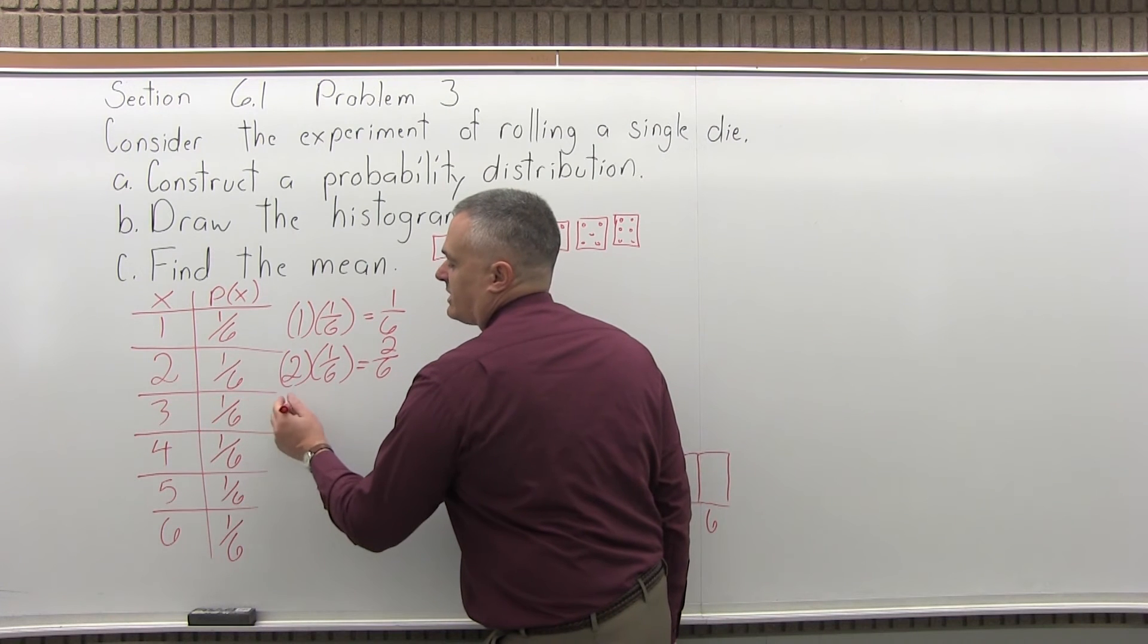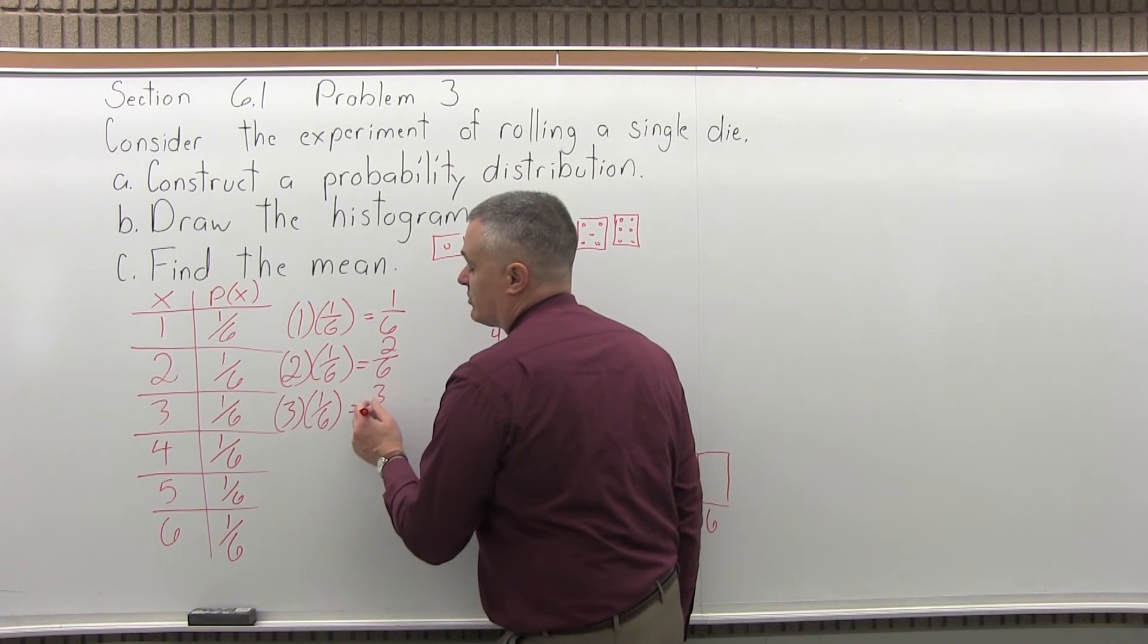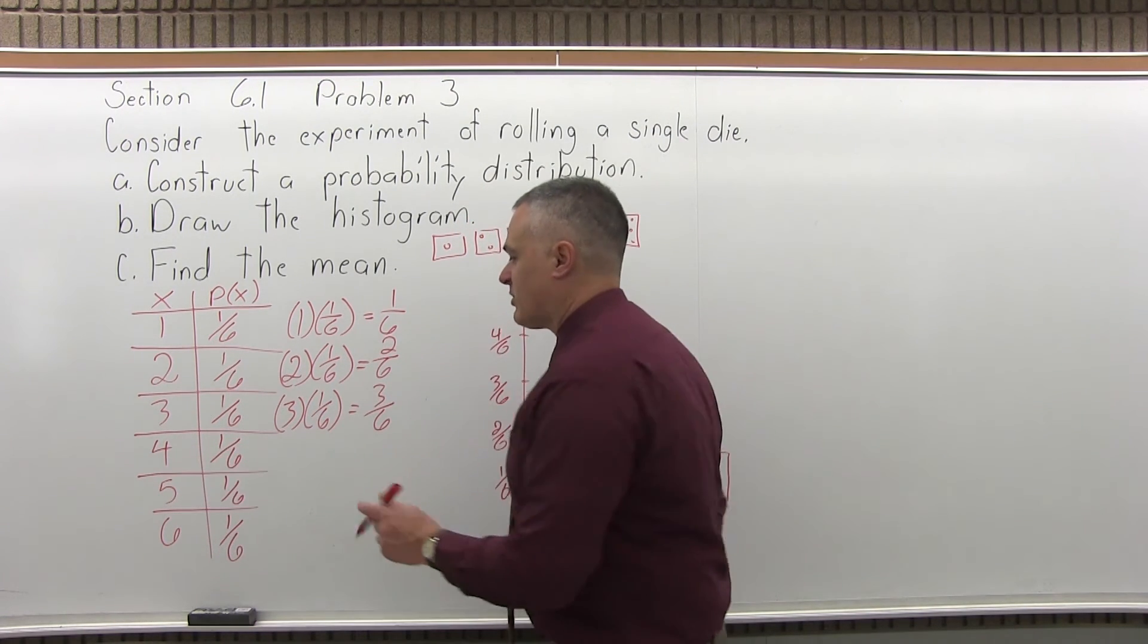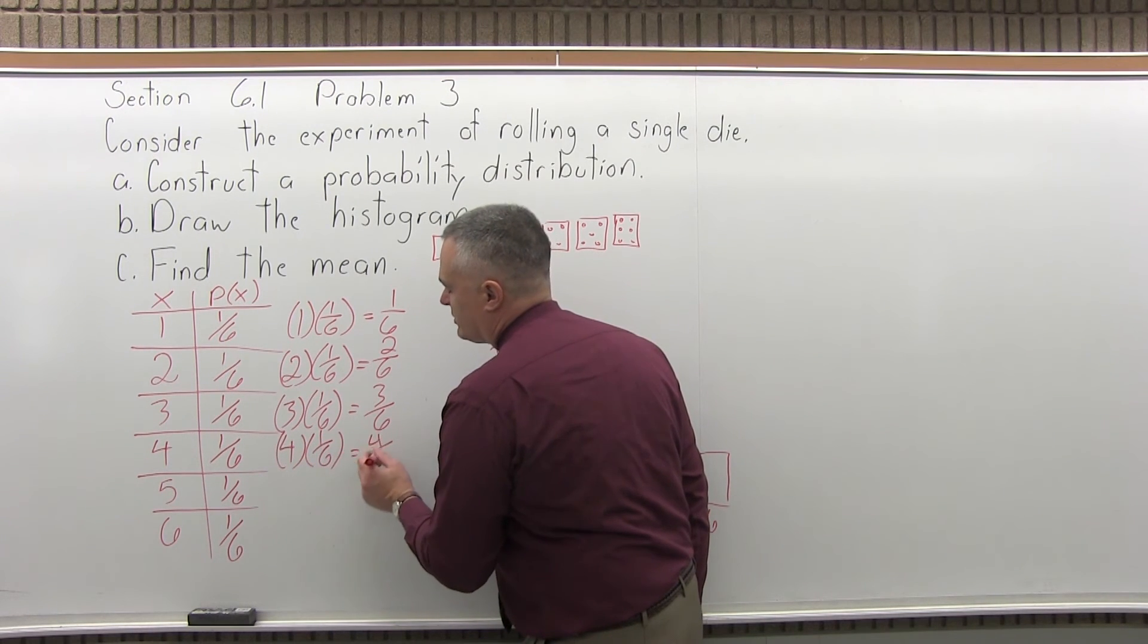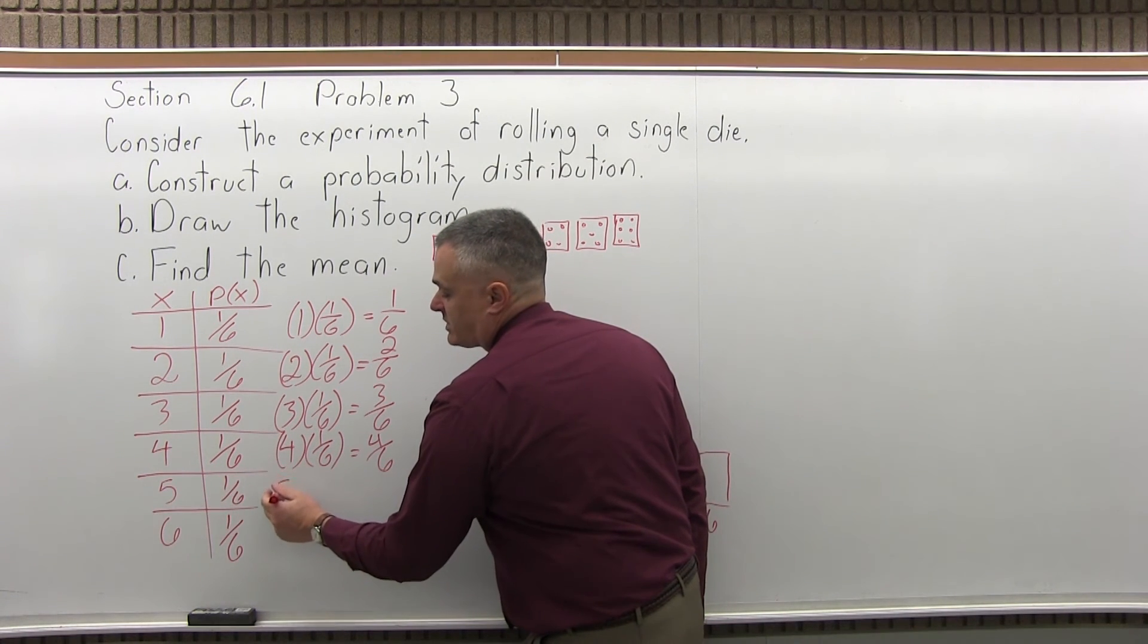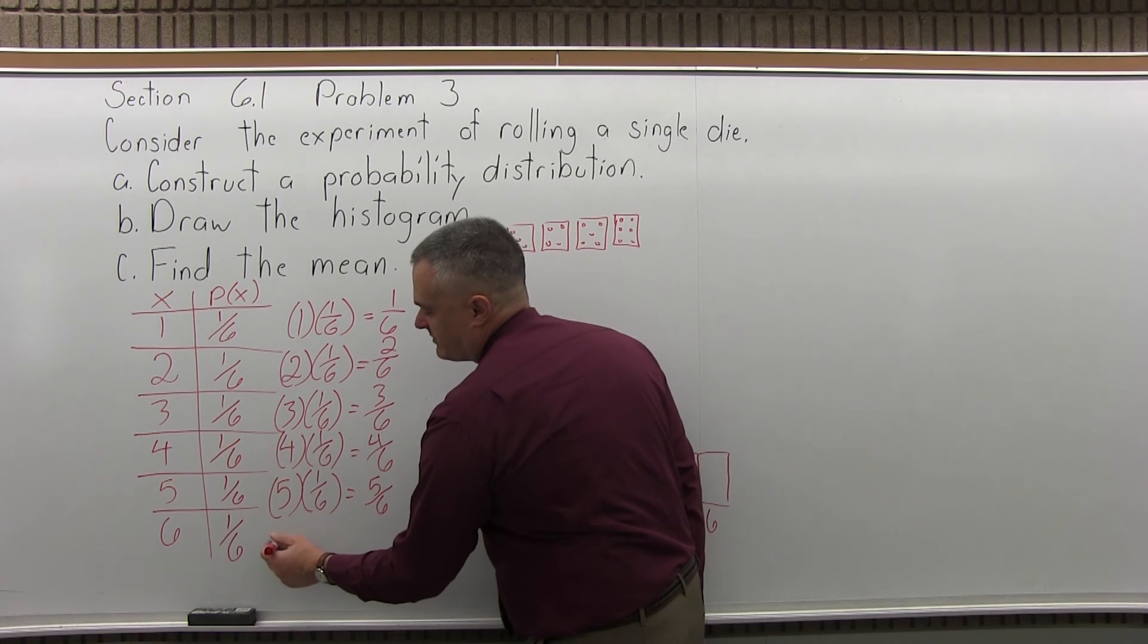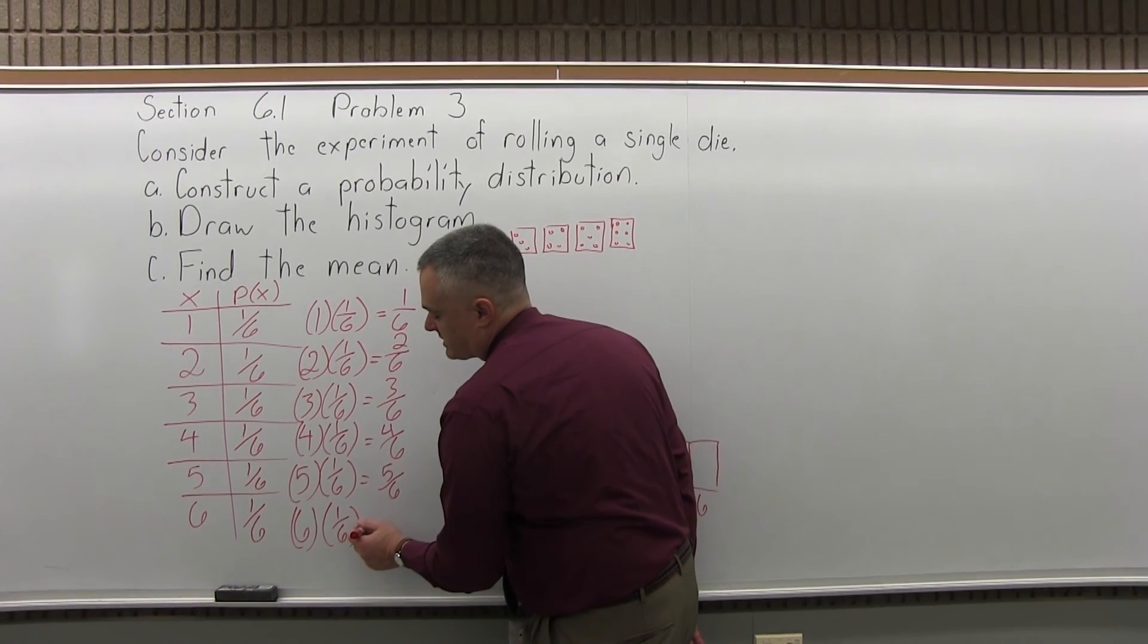So the next row down, the number in the first column, 3, times its probability, which is also 1 over 6, multiplies to 3 over 6. The next row down, the number in the first column is 4 times its probability, times 1 over 6, would give me 4 over 6. The next row down, the number in the first column is 5 times its probability, 1 over 6, would be 5 over 6. And finally, the last one, the number in the first column is 6 times its probability, which is also 1 over 6, would be 6 over 6.